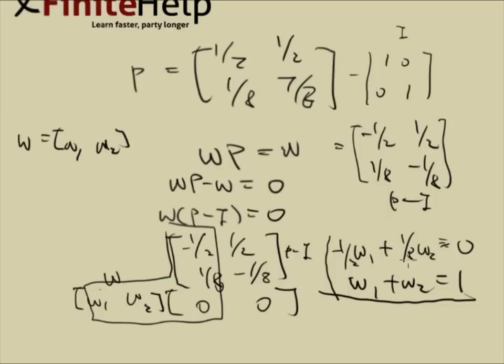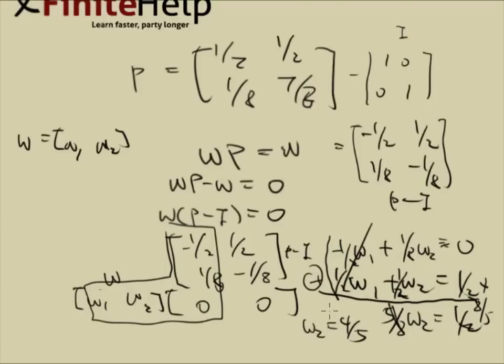Now we just solve for this equation. I'm going to multiply 1 half to everything in the second equation. Now we add the two equations. W1 goes away. We have 1 eighth plus 1 half is 5 eighths. 5 eighths w2 equals 1 half. And we multiply the reciprocal over, which we get w2 equals 4 fifths. W1 would be 1 fifth, but we are not asked for w1. We are asked for w2. So 4 fifths is your final answer.